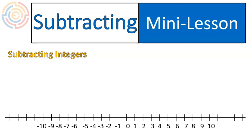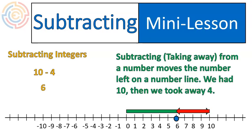So let's talk about subtracting. Subtracting integers would look kind of like this. 10 minus 4. So we'll start with 10, and we'll go back 4, and we end on the point 6. 10 minus 4 is 6. Subtracting, or taking away from a number, moves the number left on the number line. So we had 10, and we took away 4. That's what's subtracting. If adding is joining together, subtracting is taking away. That's just some vocabulary, so we're all on the same page.